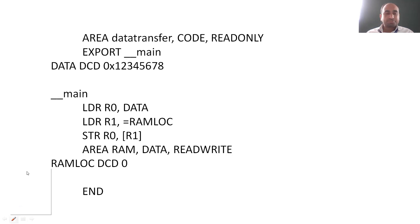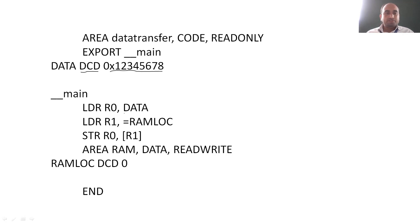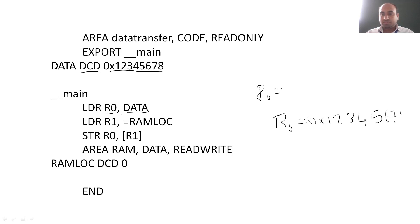This step represents that we are initializing the data. DCD stands for Define Constant Data. We are defining the constant data as 0x12345678. This is the data we are defining. Coming to __main — that is the main program. Below this, whatever instructions we write, that is the main program. The first step, as mentioned, is to load the data into R0 register, so R0 will be loaded with 0x12345678.